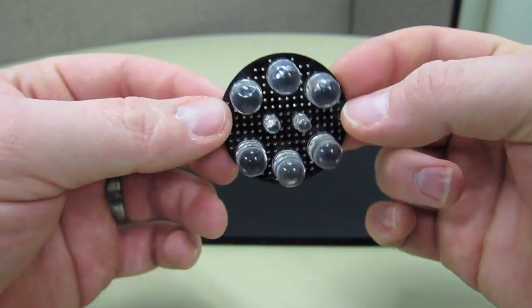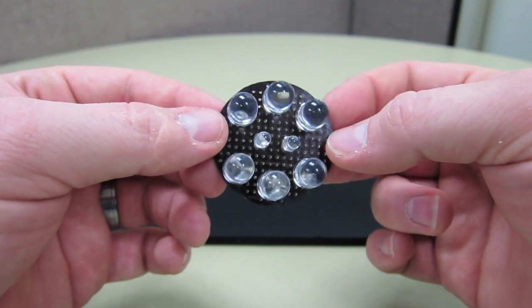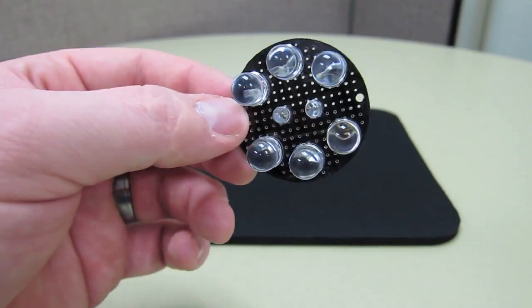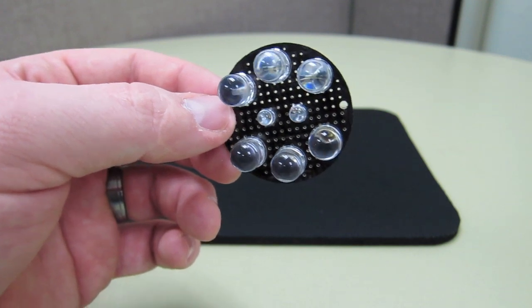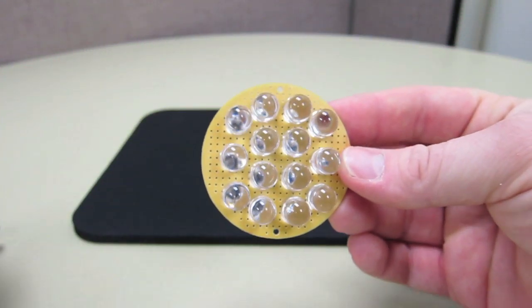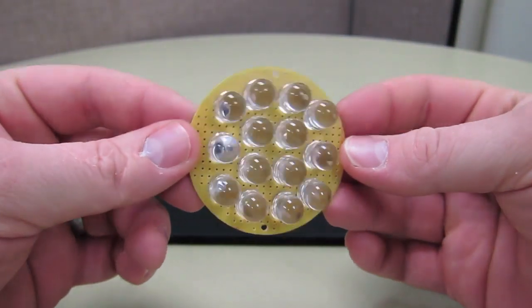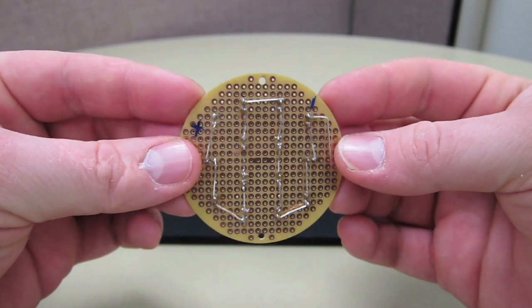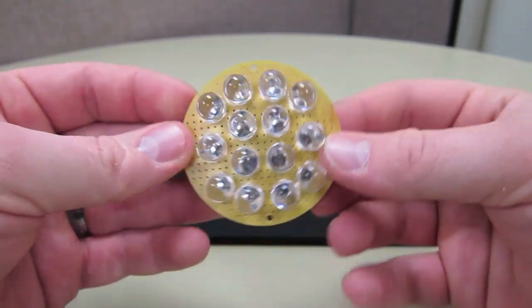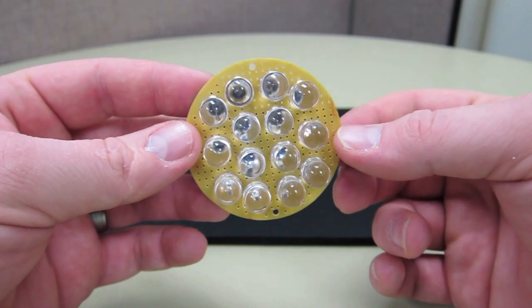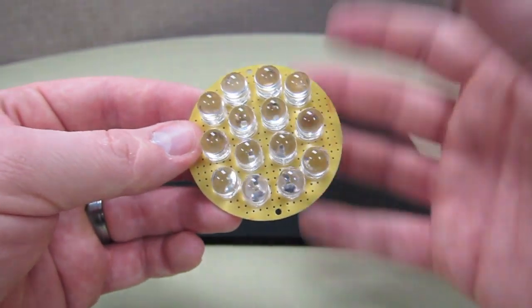But because mine does not have night vision capabilities stock, or well it wasn't intended for that, I also made a flood plate with 14 of them. So this one I ran in serial too.